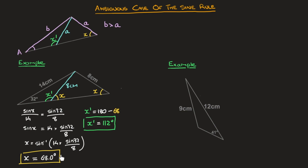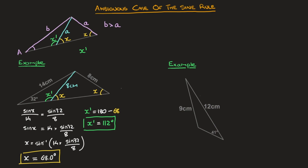We've found the two possible values for the angle opposite the 14-centimeter side length. We'll always be able to find the second possible angle by subtracting the first from 180, because the triangle formed is always isosceles. Consequently, x prime will always equal 180 minus x. With that in mind, let's look at the second example.